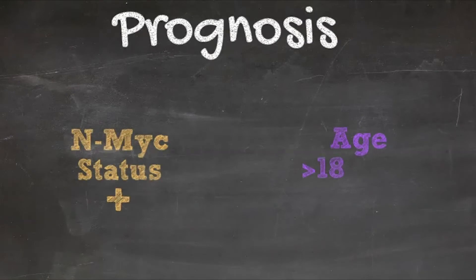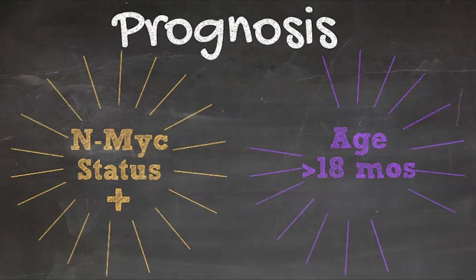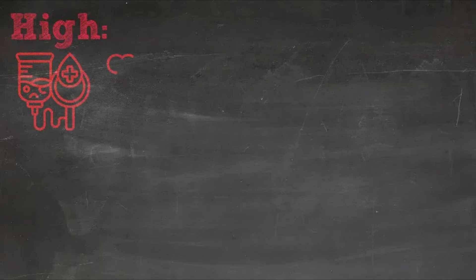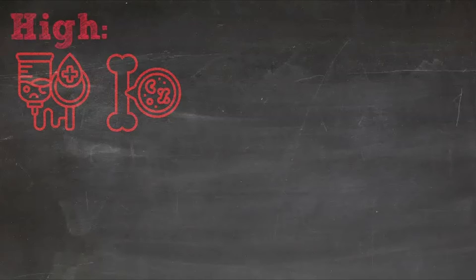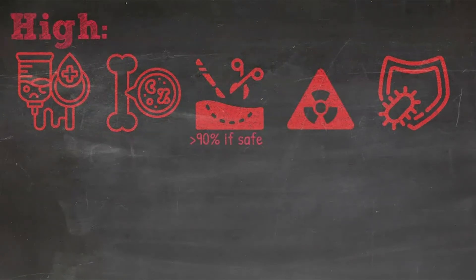NMYC and age greater than 18 months are the most important prognostic determinants for neuroblastoma. In patients with high risk tumor, they receive aggressive chemotherapy, including peripheral stem cell transplant times two, as well as aggressive surgery with the goal of a greater than 90% resection of the tumor, followed by radiation, immunotherapy after the chemotherapy, and potentially retinoic acid therapy — so very aggressive therapy for the high risk group.